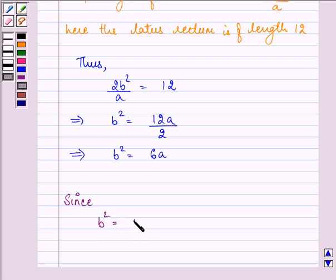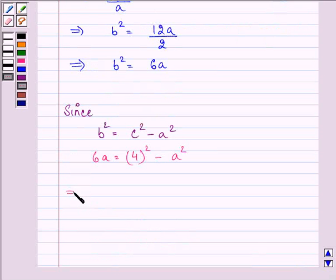Since b² = c² - a², we have 6a = 16 - a². This further implies a² + 6a - 16 = 0. On factorizing the middle term we have (a - 2)(a + 8) = 0.